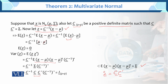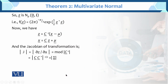C times c prime gives the identity matrix, and c inverse times c inverse transpose also gives the identity. So the total variance-covariance matrix of z equals the p×p identity matrix. Therefore, the transformed variable z follows the standard multivariate normal distribution. The pdf of z is f(z) = (2π)^(−p/2) times the exponential term. This is the pdf of the transformed distribution.